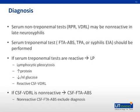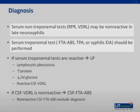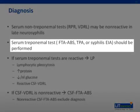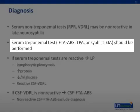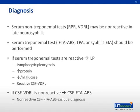In making a diagnosis of neurosyphilis, serum non-treponemal tests — which include RPR and VDRL — may be non-reactive, particularly in tabes dorsalis. Only approximately 70% of people with neurosyphilis have a positive VDRL. Serum treponemal tests should always be performed when there is a concern for late neurosyphilis. These include fluorescent treponemal antibody absorption, Treponema pallidum particle agglutination assay, and syphilis enzyme immunoassay. These tests remain reactive for life regardless of prior treatment. Patients with non-reactive serum treponemal tests do not merit further evaluation for late neurosyphilis.